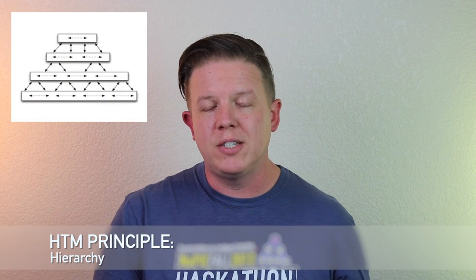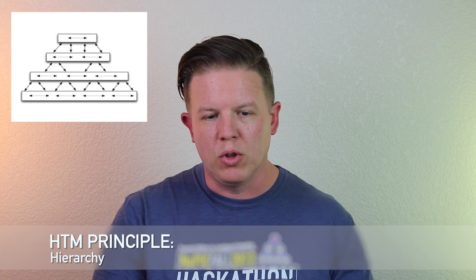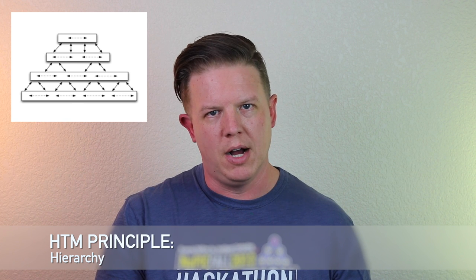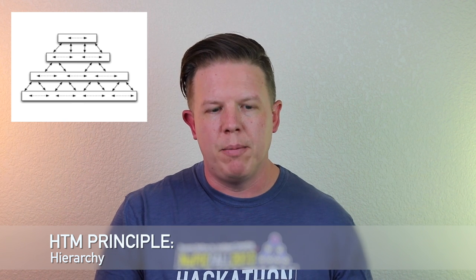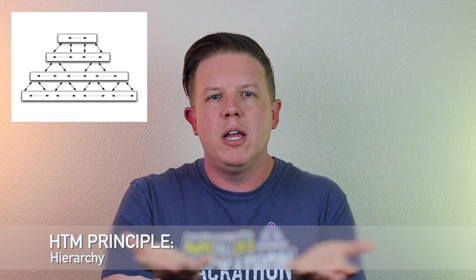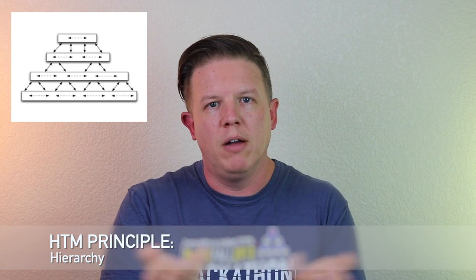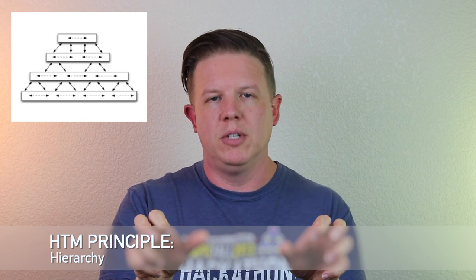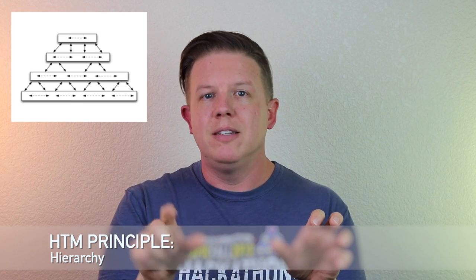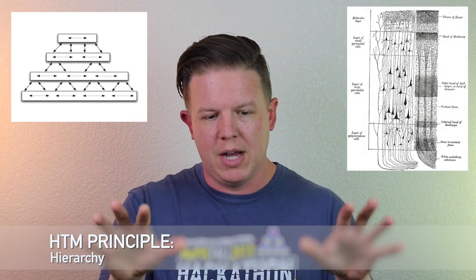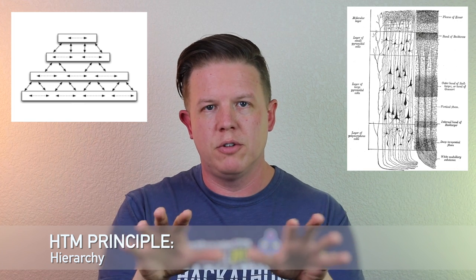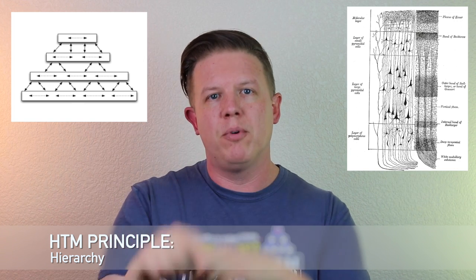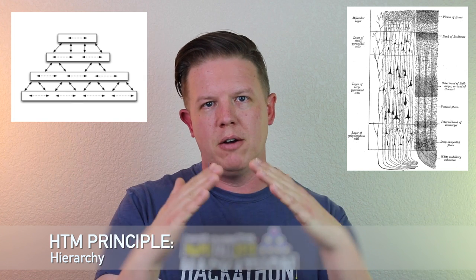The raw sensory data — the more lower-level types of data coming from your ears, eyes, and senses — come up at the lower levels of that hierarchy and are processed by nodes in the lower levels. The output of those nodes is then passed up to higher levels in the hierarchy, processed in the same fashion because of this common cortical structure, and the output of those regions is then set upward, continuing up the hierarchy.